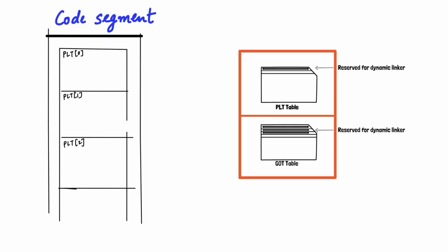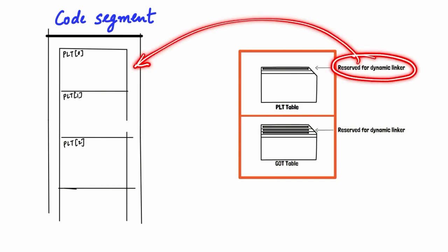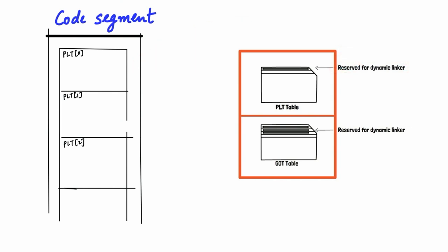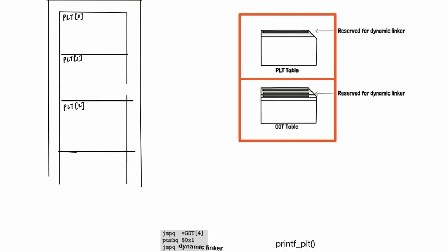Now let's delve deeper into these tables. We'll extract the PLT table from the orange rectangle and try a new diagram on the left side to clarify its structure. Here the PLT table resides in the code segment of the application, and as mentioned earlier, the first entry is reserved for the dynamic linker.